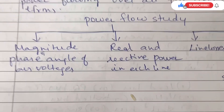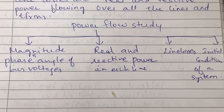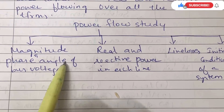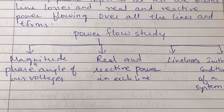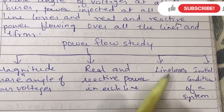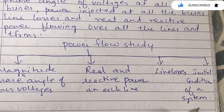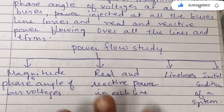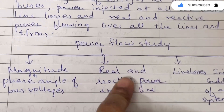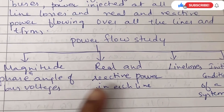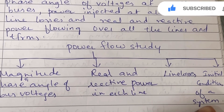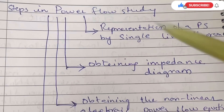If you draw it out, power flow study covers four conditions: first, magnitude and phase angle of bus voltages; second, real and reactive power in each line; third, line losses; and fourth, initial conditions of the system.